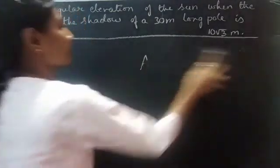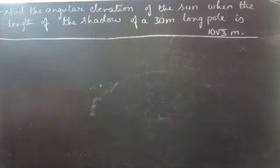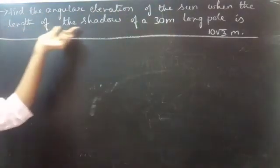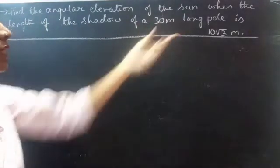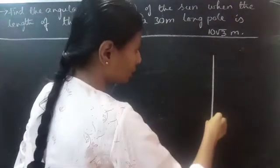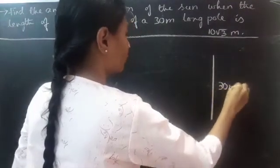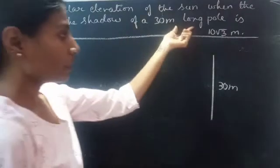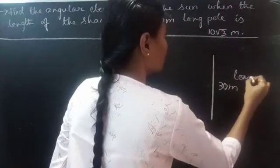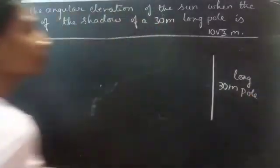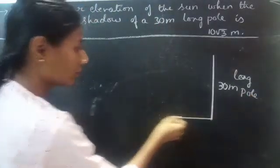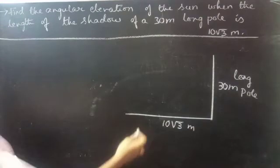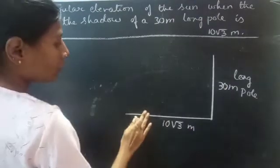Now coming to the problem. Find the angular elevation of the sun when the length of the shadow of a 30 meter long pole is 10 into root 3 meter. This is the length of the shadow of the long pole.